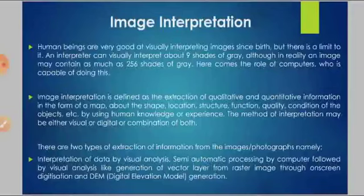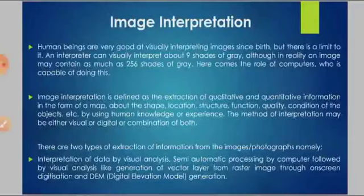As I discussed in the previous session, we human beings are capable of interpreting only a few shades of grey. Although there are 256 shades of grey, we can identify or interpret only 9 shades of grey. In order to interpret the remaining shades which we can't observe with our naked eye, we may have to use computers for that particular purpose.